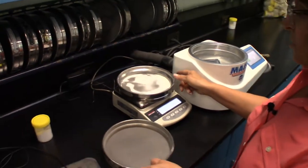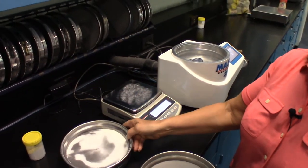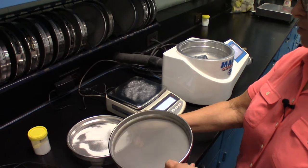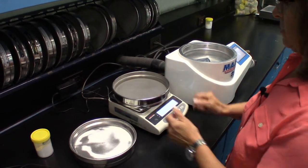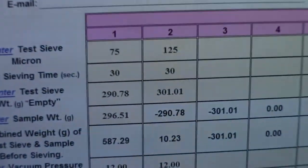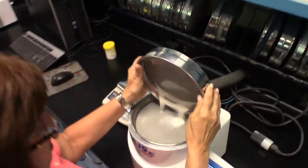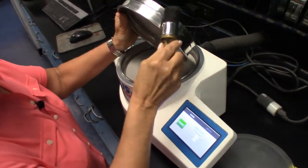Now I'm going to weigh my second screen, which is the 120 mesh screen, and place that on the scale. Now I'm going to put that screen on the JetSiv and transfer the material from the first screen to the second screen.